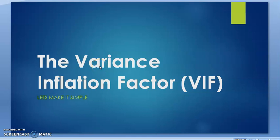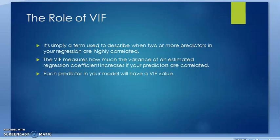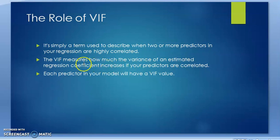We continue our lecture on multicollinearity problem in multiple regression model by understanding the role of the Variance Inflation Factor, or VIF. The role of VIF is simply a term used to describe when two or more predictors in your regression are highly correlated. The VIF measures how much the variance of an estimated regression coefficient increases if your predictors are correlated. Each predictor in your model will have a VIF value.